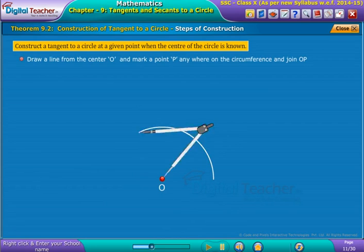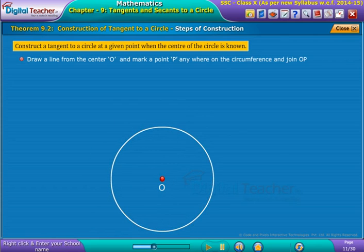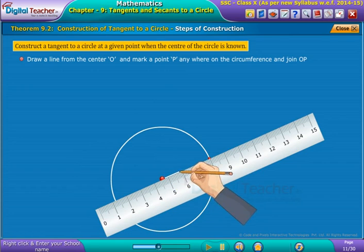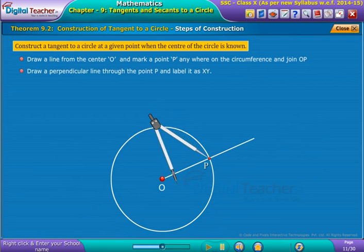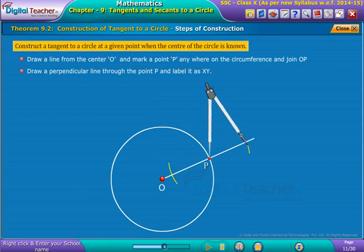Draw a line from the center O and mark a point P anywhere on the circumference and join OP. Draw a perpendicular line through the point P and label it as XY.